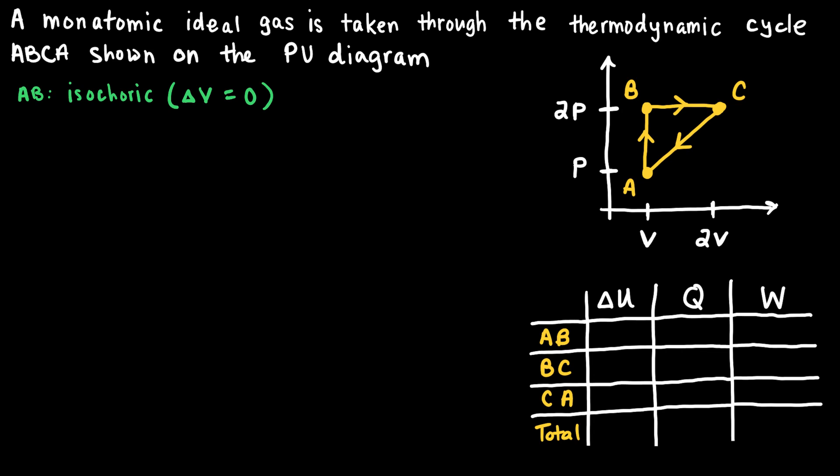If the gas does not experience a change in volume, then the gas is not able to exert a force over a distance. And so the work done by a gas in an isochoric process will always be zero.